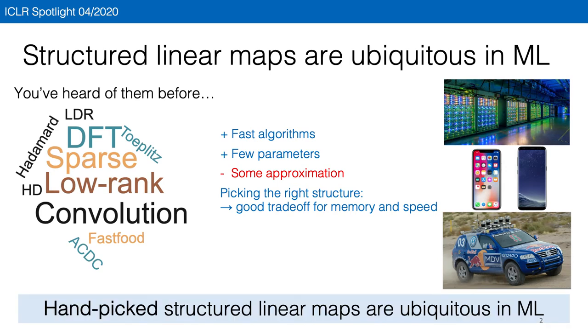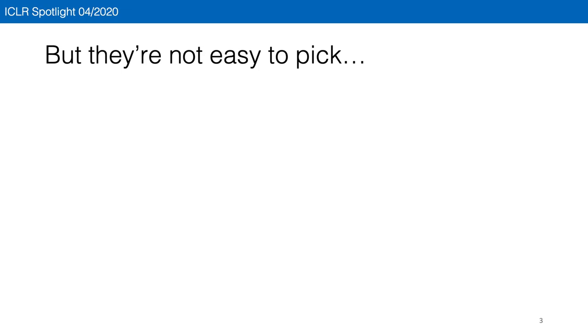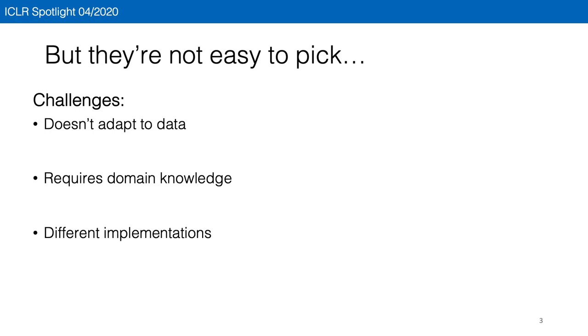These hand-picked structural linear maps are ubiquitous in machine learning. The problem is that it's not easy to pick which class of structural linear maps to use. Some of them, like Fourier transform, are fixed and don't adapt to data. You may need extensive domain knowledge to pick the right type to use, and they may have very different implementations and thus require lots of effort to get them to work.